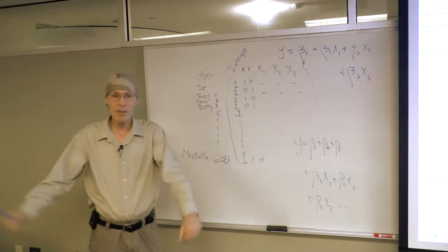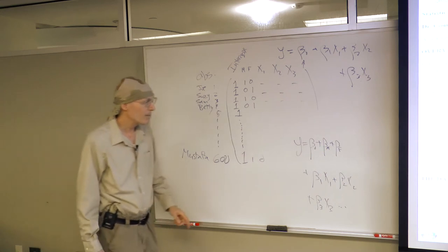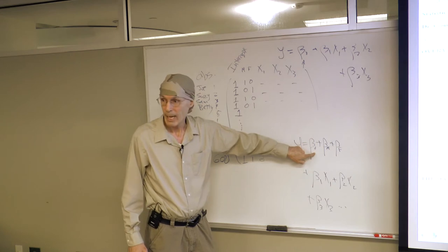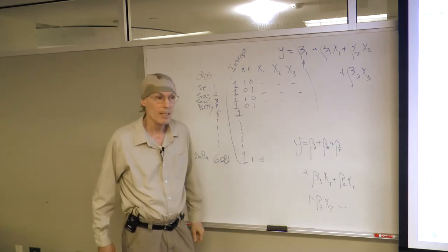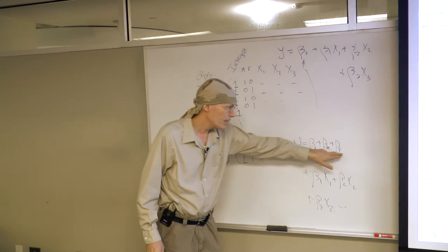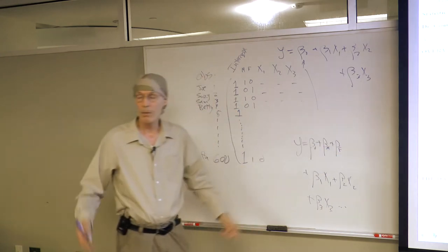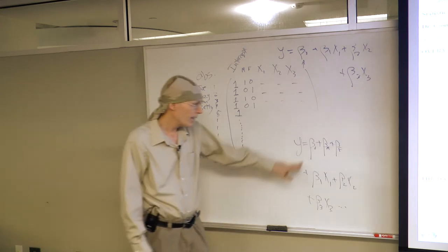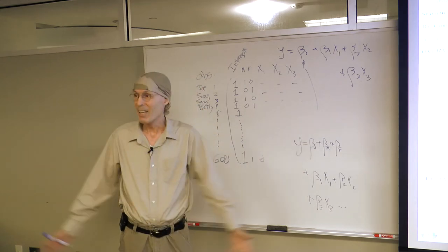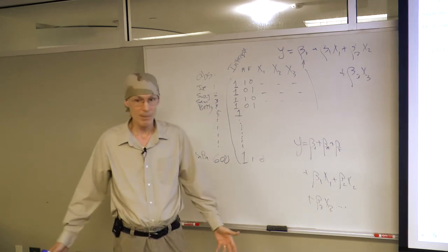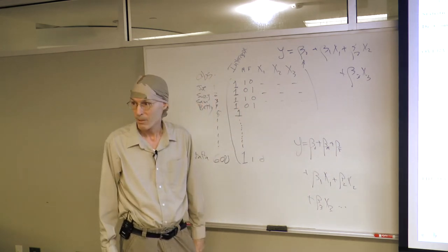I've created my own intercepts — and then you run it, and it doesn't work. It bonks out. Why? Because this column of ones the program put in automatically is actually a linear combination of the two dummy variable columns. If you add the male intercept column and the female intercept column, you get a column of ones — exactly what the program already inserted. R is going to say: how am I supposed to know the difference between these two guys and this guy? There is no difference. So it's not going to work.